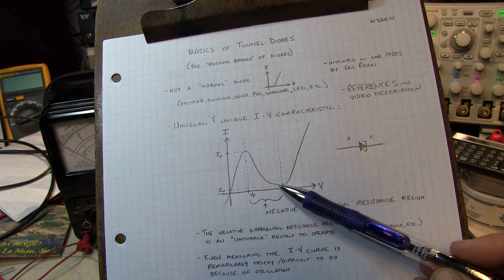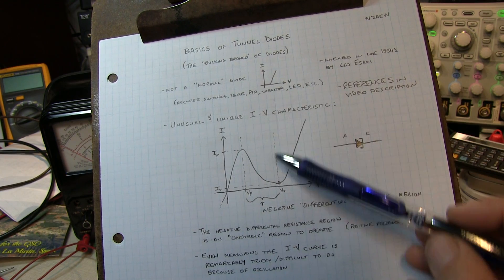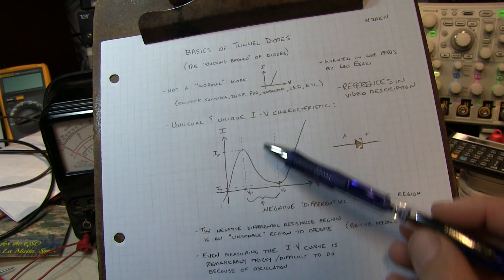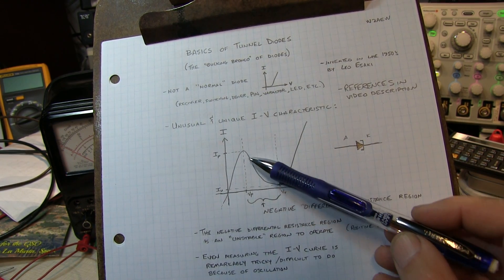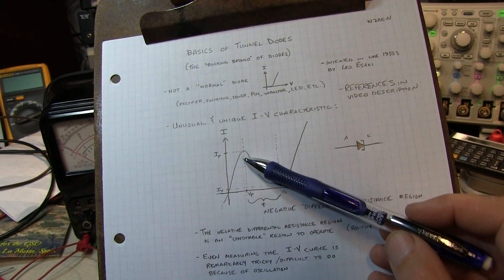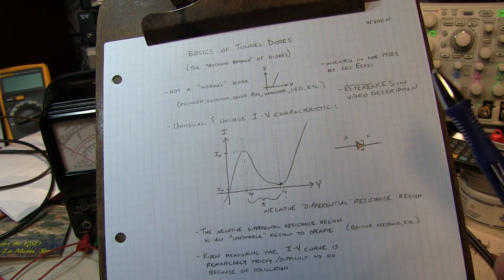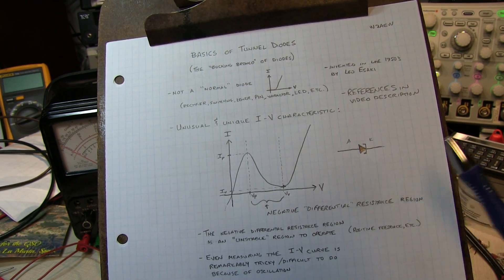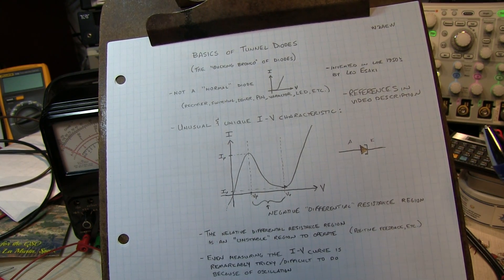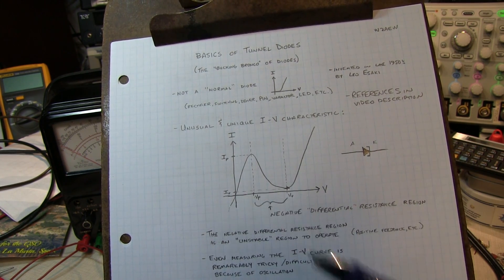So that portion of it looks a bit more like the regular diode characteristic, but in between here, in this little region, you've got this negative resistance characteristic. And this is the thing that gives the tunnel diode its unique characteristics and leads to the unique applications for a tunnel diode.